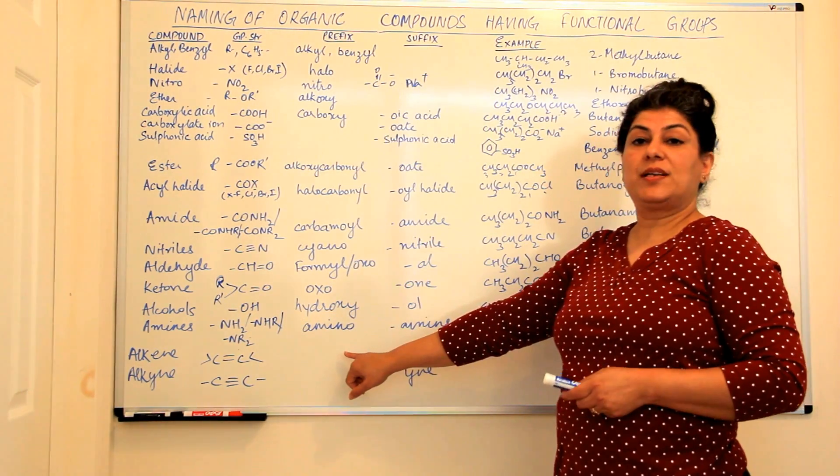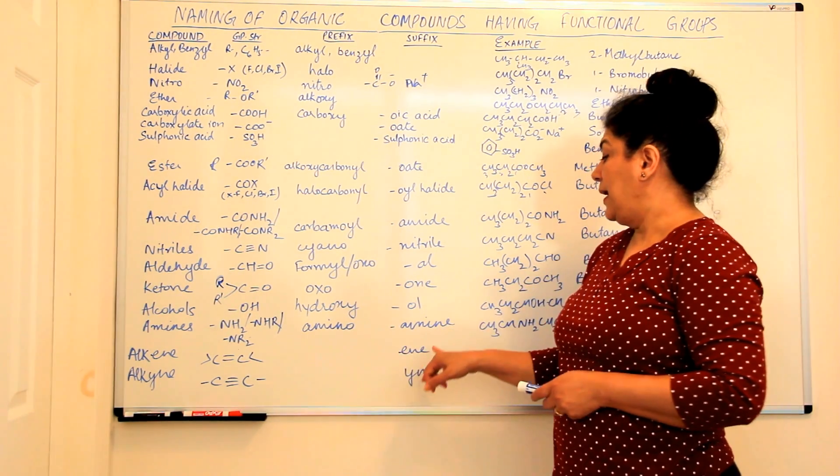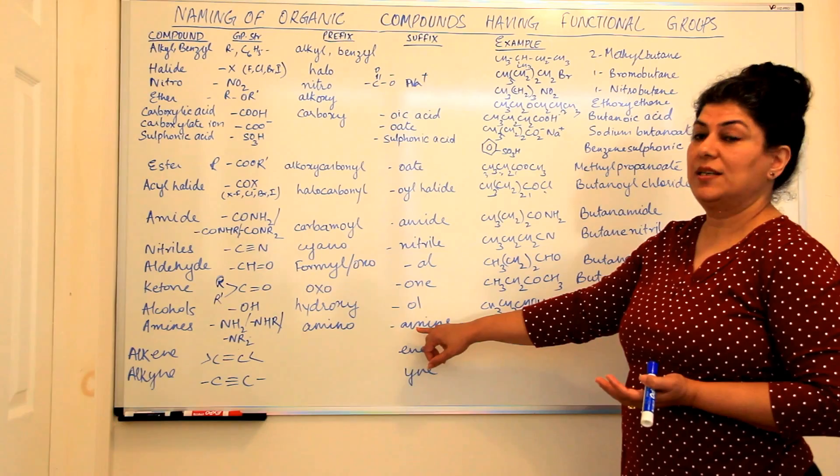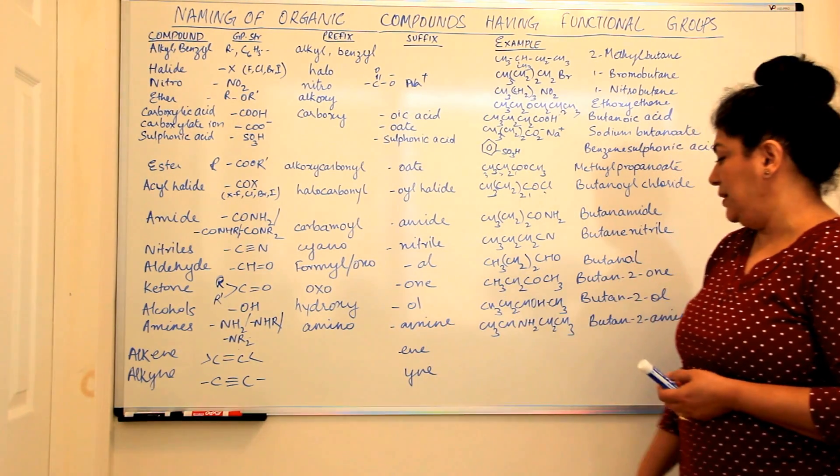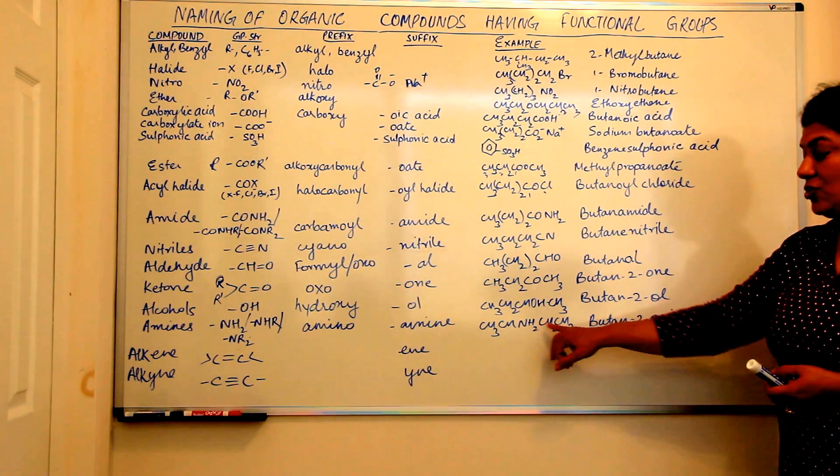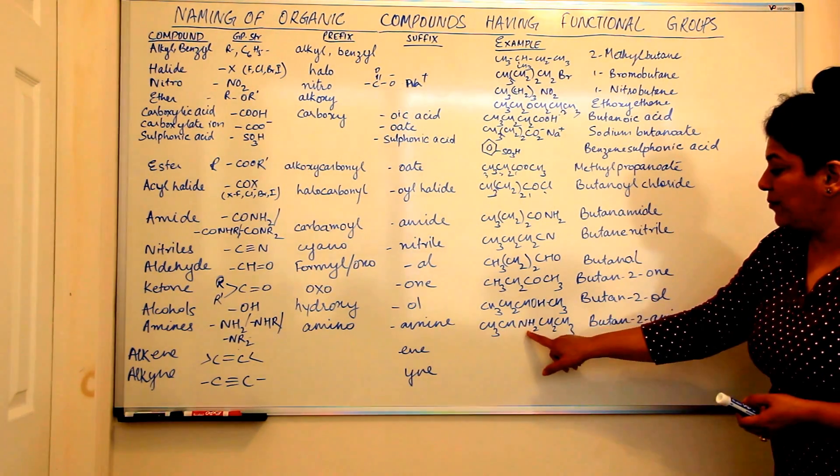As prefixes, amines are written as aminos and as a suffix, if only the amine is present, then it is written as amine. For example, in this compound, as you see, it is not a terminal group. It is somewhere in the middle.